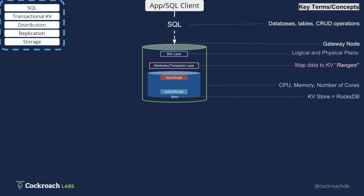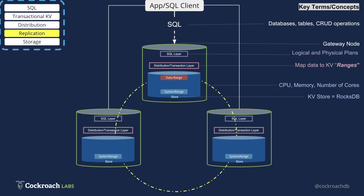But how many nodes do we need? To ensure consistency, CockroachDB uses a consensus protocol that requires a quorum on any changes to a range before those changes are committed. Because 3 is the smallest number that can achieve quorum, CockroachDB requires 3 nodes. The consensus protocol we use is called Raft.